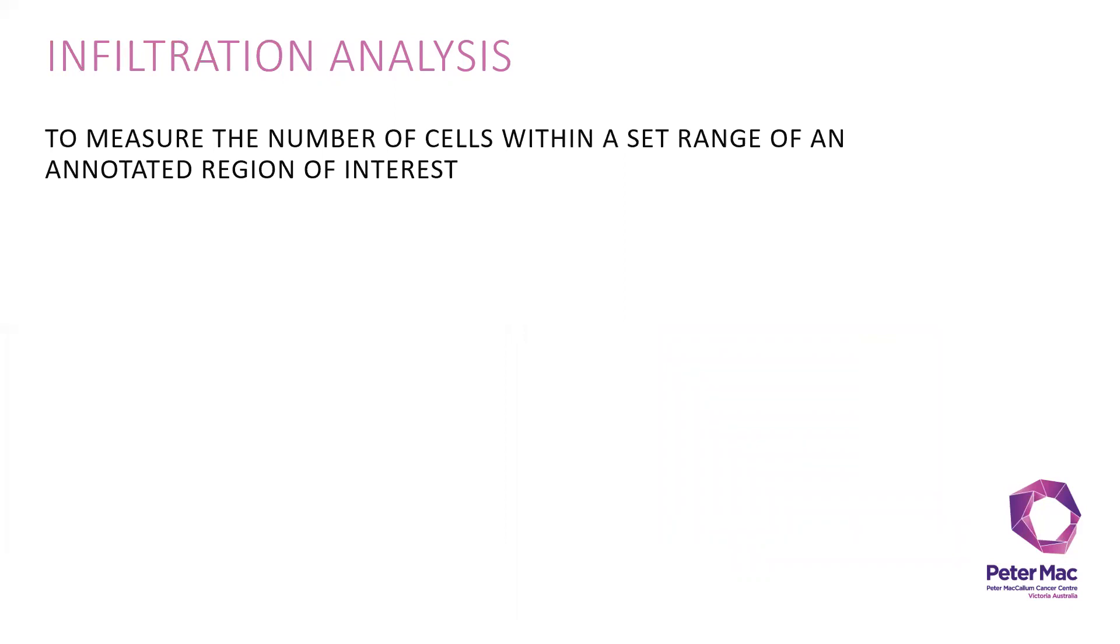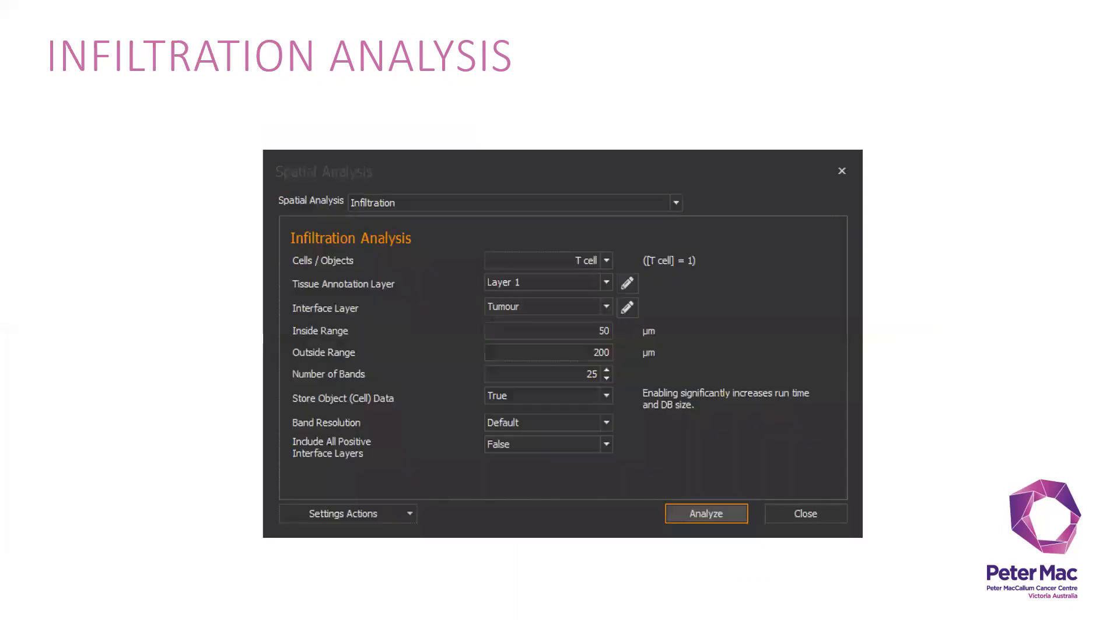For infiltration analysis, it's used to measure the number of cells within a set range of a region of interest. This is where the automated annotation using classifier comes in handy. I would like to measure the T cells within the tissue layer corresponding to tumor inside the tumor, 50 microns, and then outside of tumor, 200 microns, with 25 bands, giving me a 10 micron range.